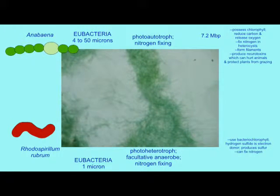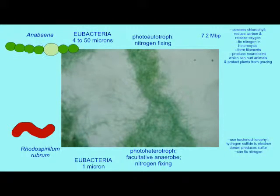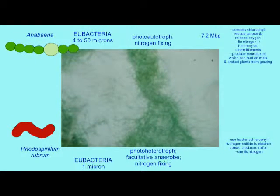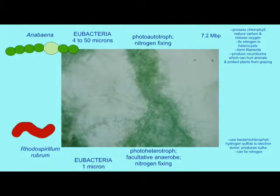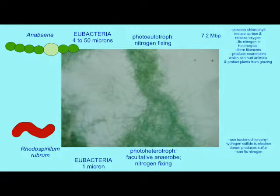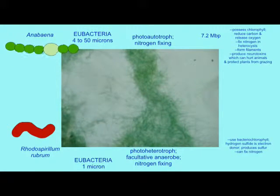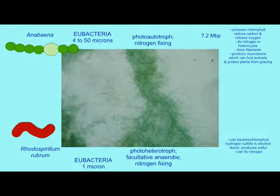There are other bacteria which perform photosynthesis, but they are heterotrophs, not autotrophs, because they do not reduce carbon dioxide to form organic molecules. They must absorb organic molecules from their environment.